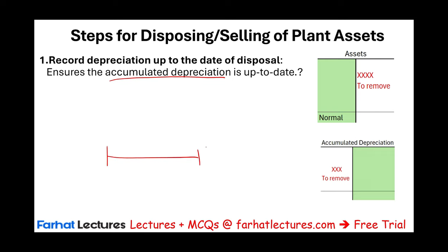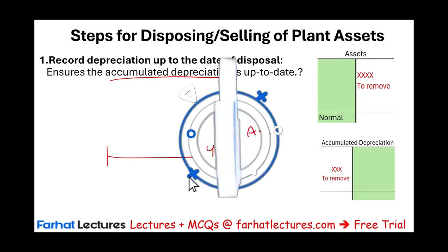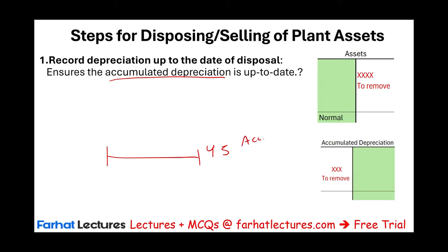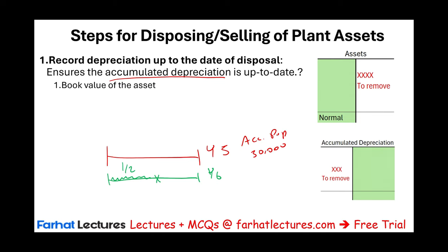For example, let's assume accumulated depreciation at the end of year five was $30,000. And the problem tells you the asset was disposed of halfway through year six. That means you have to book an additional half a year of depreciation before you dispose of the asset. Why do you need your accumulated depreciation up to date? Because you need your book value up to date, and from the book value you are going to compute either a gain or a loss on this disposal.